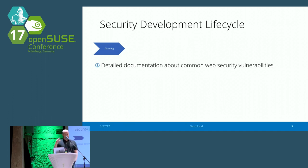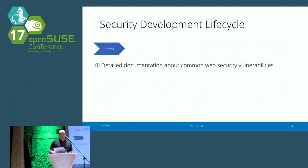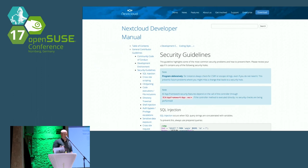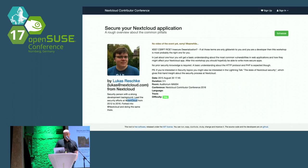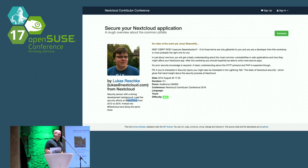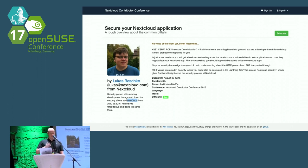The first thing is training — people have to understand what is good and what is bad. You have to train the developers. Nextcloud is an open source project with a lot of external contributors, so we have to explain this to everyone. We have detailed documentation about common web security vulnerabilities, and we do regular trainings. Our security lead does sessions at our conference to tell people how this all works. I learn something every single time I go to those trainings — this is complex stuff.